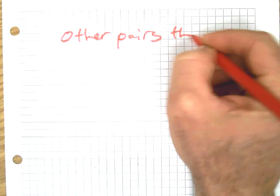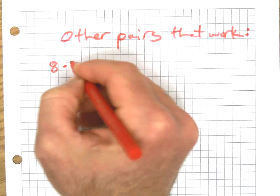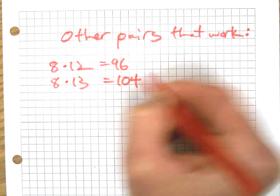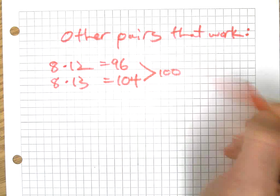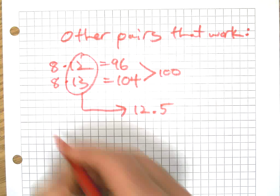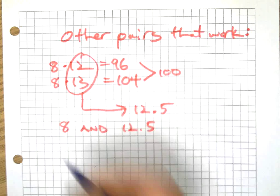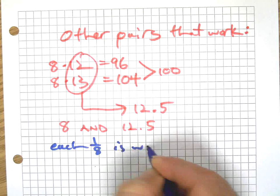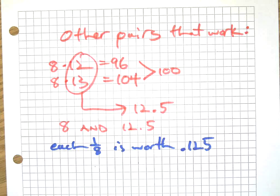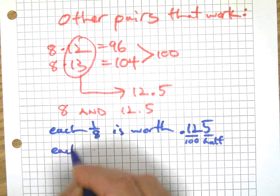Here's some other pairs that work. Once you know this system, you want to be prepared for every situation. For example, 8 times 12 is 96, and 8 times 13 is 104. Look, exactly in between there is 100, so exactly in between there is 12 and a half. So 8 and 12.5 work. That means each one-eighth is worth 12.5 hundredths—there's the hundredths, there's the half of another hundredth.